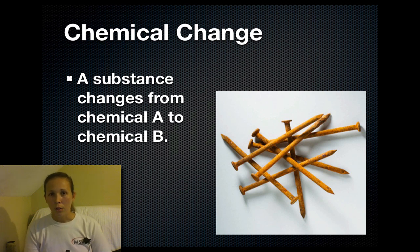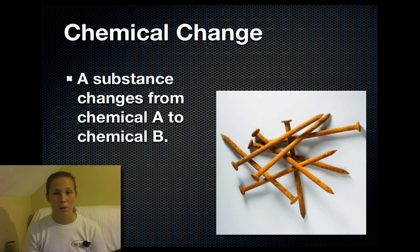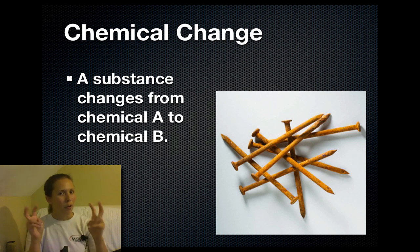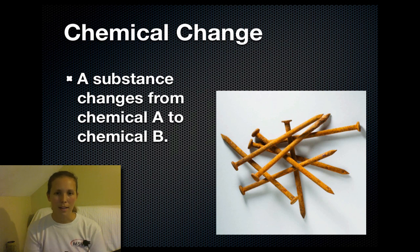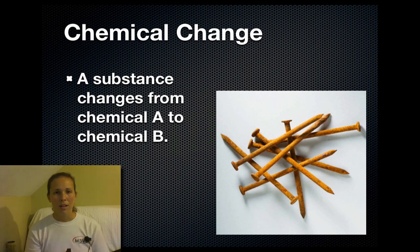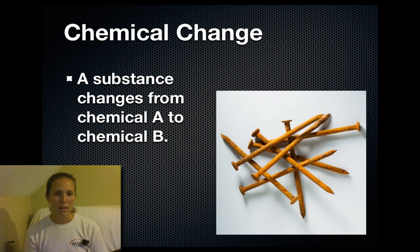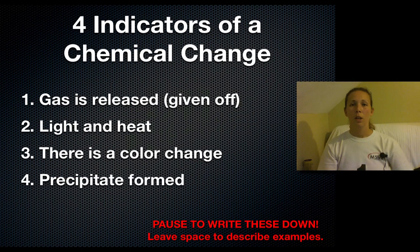You guys have seen a little bit of this in the first lab we did — the chemical and physical properties lab. Chemical change is where a substance changes from chemical A to chemical B. I gave you guys a picture of rusty nails because rusty nails are undergoing a change where the metal in the nail is reacting with oxygen to create a new product, rust, and the nails will never go back to what they used to be.